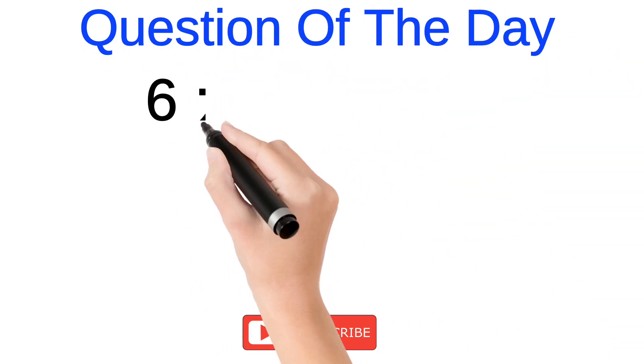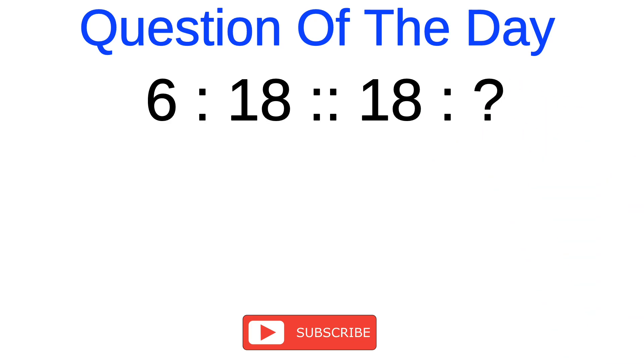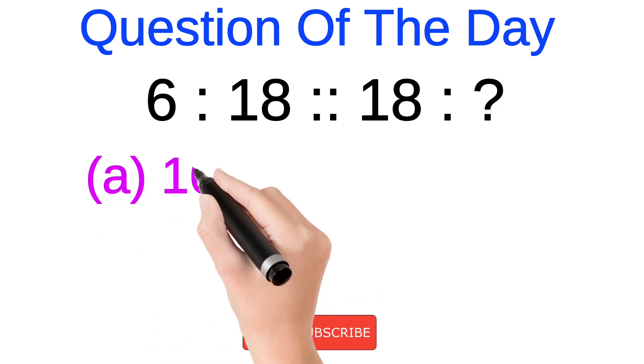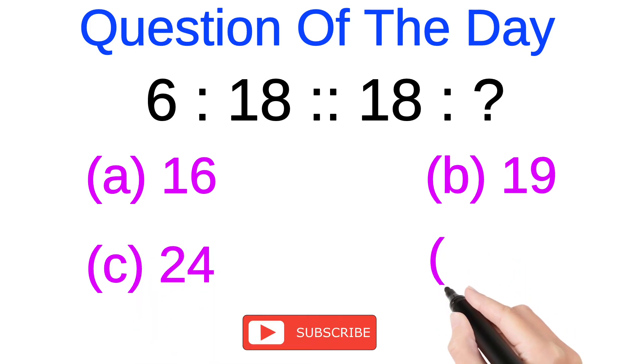Question of the day is 6 colon 18 double colon 18 colon question mark. What will be the number at the place of question mark? Your options are as follows: option A 16, option B 19, option C 24, option D 32.